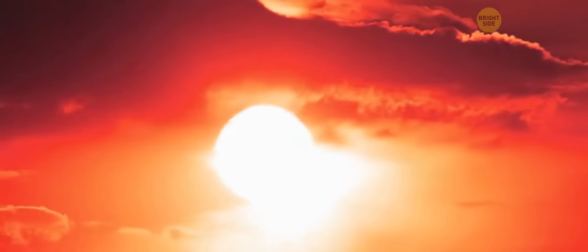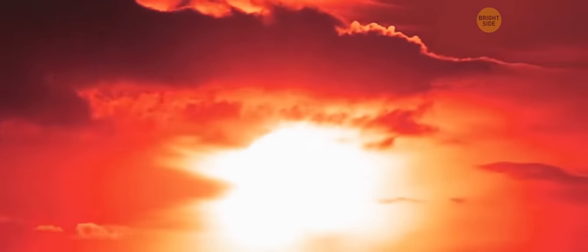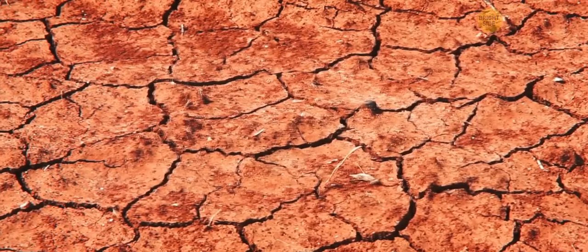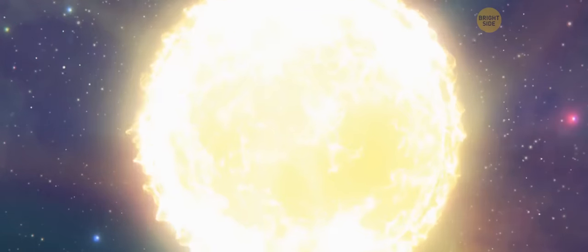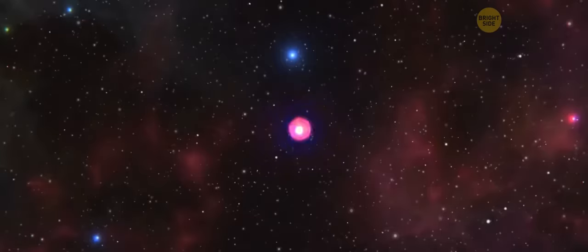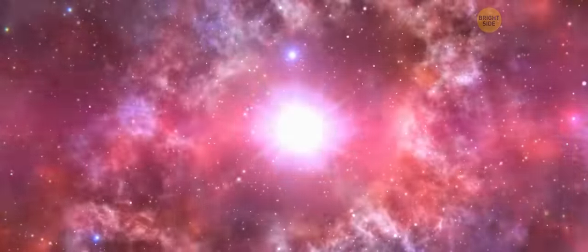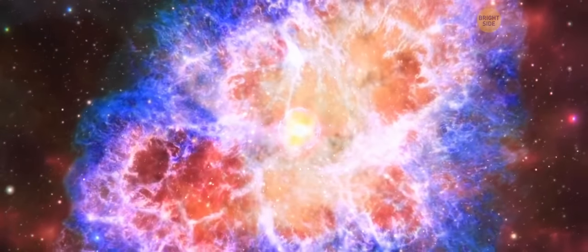This will cause it to expand. Then we'll see more beautiful sunsets and sunrises, but the temperature will become too high. In theory, the Sun will get so big that it'll swallow the Earth. And then, it'll explode in a supernova, leaving nothing of our entire solar system behind.